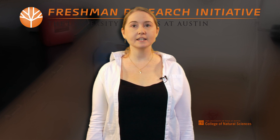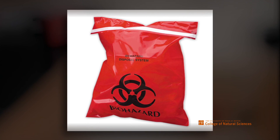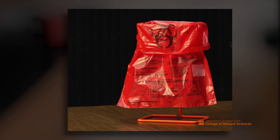Any lab that works with biohazardous agents will have designated biological waste disposal containers provided by EHS. There will typically be at least one main biohazard waste collection point, which is often a large biohazard waste bag in a cardboard box labeled with the biohazard symbol. The lab may also contain one or more sharps disposal containers. Satellites, or small biohazard waste collection points, may be present at locations of use throughout the lab, for example near instruments or lab benches.